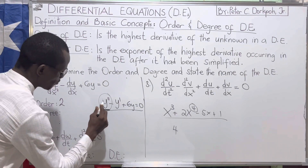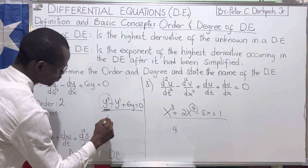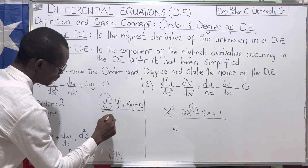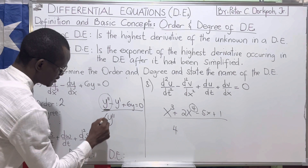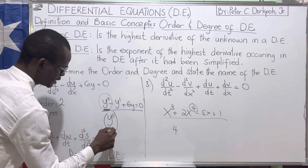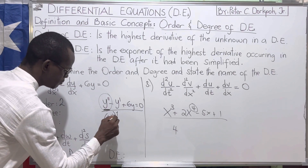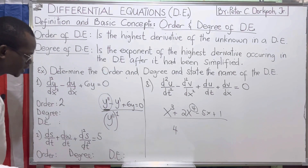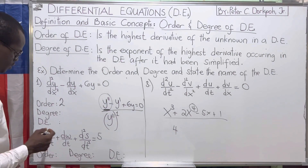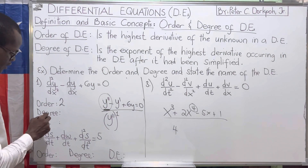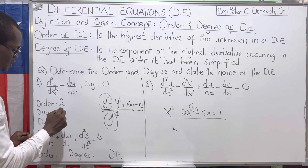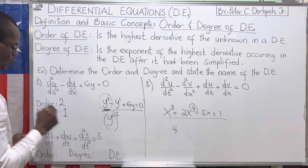So this y double-prime — what is it raised to? If we carefully look, it is just raised to the power of 1. So it means that the degree is equal to 1.